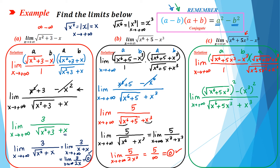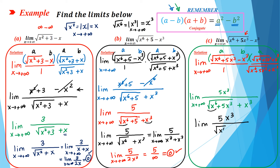Now you have to multiply using the difference of two squares, so a equals the radical and b equals x cubed. The result is the first term squared minus the second term squared. You have to simplify: the power two cancels the radical, and x cubed squared equals x to the power six. Now x to the power six minus x to the power six equals zero, so we have 5x cubed in the numerator and the conjugate in the denominator.